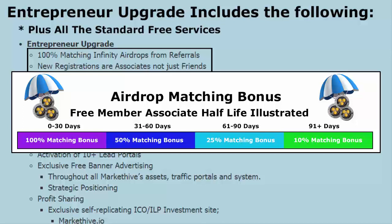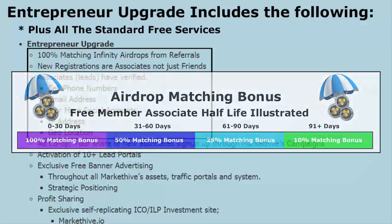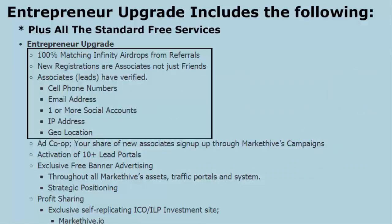If you were a free member bringing in associates and you're upgrading now to entrepreneur, you're going to get a 100% bonus if you do it within 30 days of those associates. If it's after 30 days but before 60 days, you get half of that — 50% — we call it the half-life. After 60 days before 90 days it goes from 50% to 25%, then after that it stays at 10% ad infinitum. I think that's more than fair — we want you to try it out and see that it works.